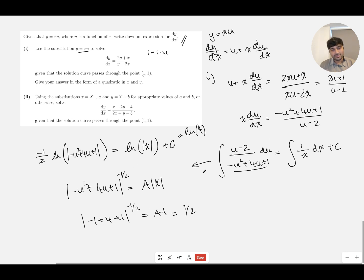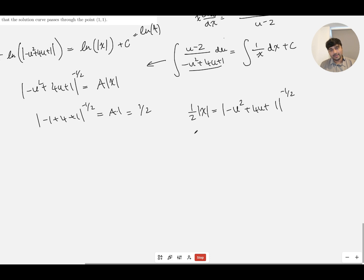So a is ½. So if I substitute that in here, I've got ½ times the absolute value of x equals (-u² + 4u + 1)^(-½). And I'm going to now replace the u's with y's over x's. So I get ½ times the absolute value of x equals (-y²/x² + 4y/x + 1)^(-½).